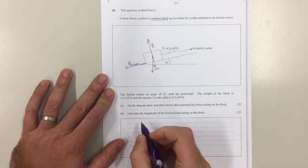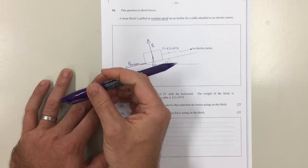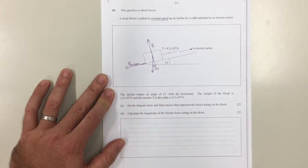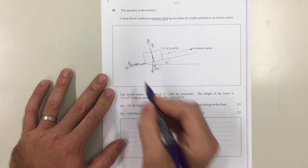And so we can say that first of all, all the forces acting down the hill equal all the forces acting up the hill because it's moving at a constant speed, so there's no net force. So all the forces acting down the hill are, first of all, friction.